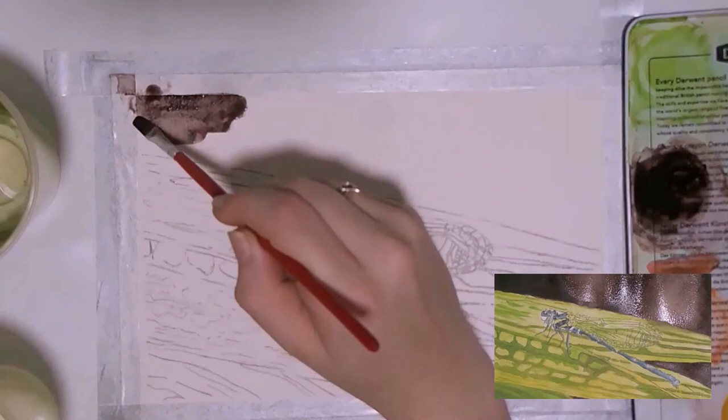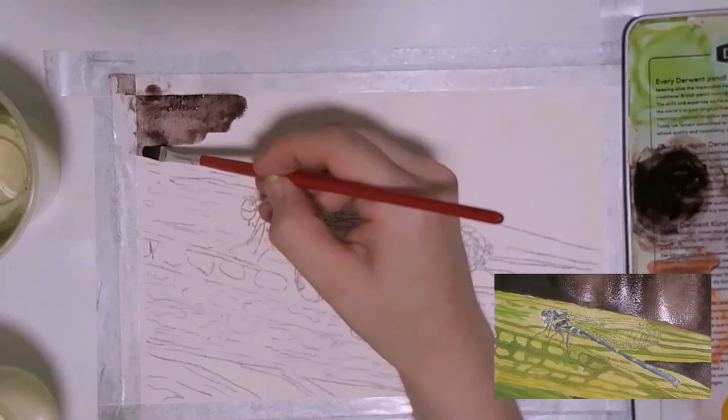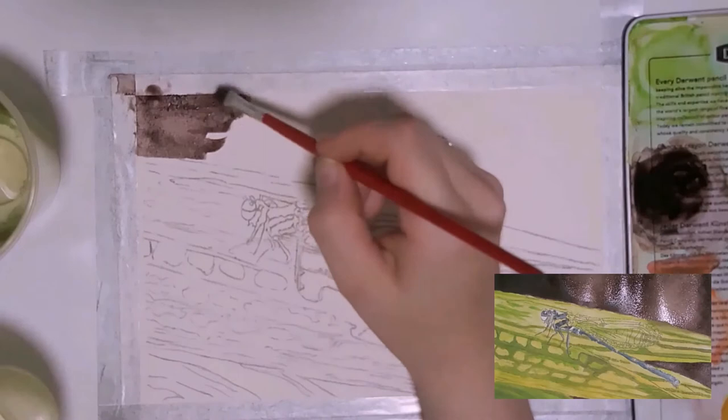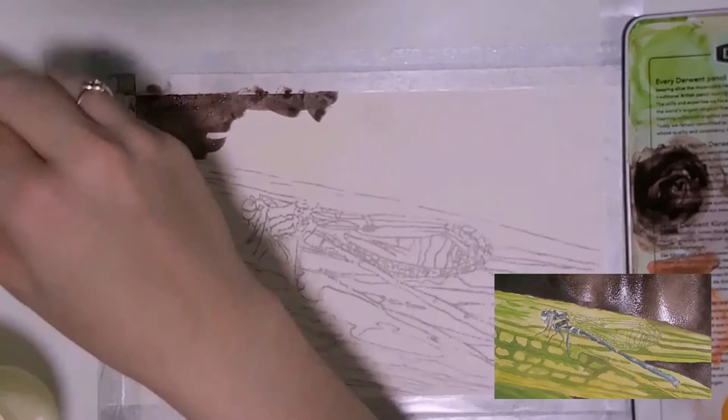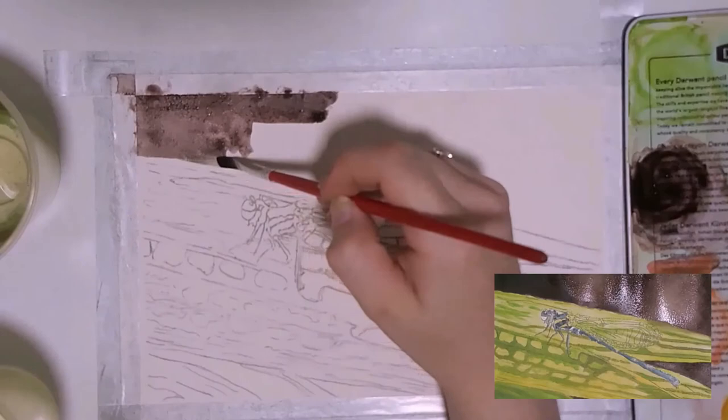If you are unfamiliar with what a tint is, it is basically just a lighter version of your original color made by adding white to it. However in this case I don't add white to lighten it since that would make the paint opaque. Instead I add more water since that will lighten it while keeping the paint translucent. If you would like to see more information on tints and other aspects of color theory, consider checking out this video.